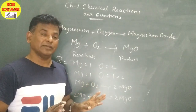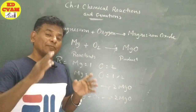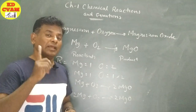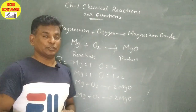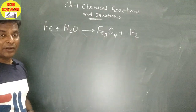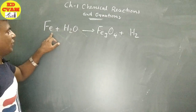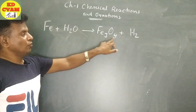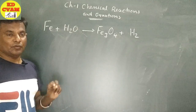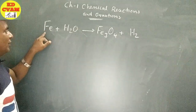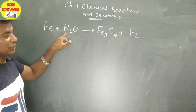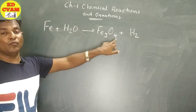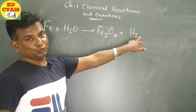I hope you understood. This was the first example. We will do one or two more examples so that you can understand well. Our next example is: Fe plus H2O gives Fe3O4 plus H2. Fe plus H2O gives Fe3O4 plus H2.